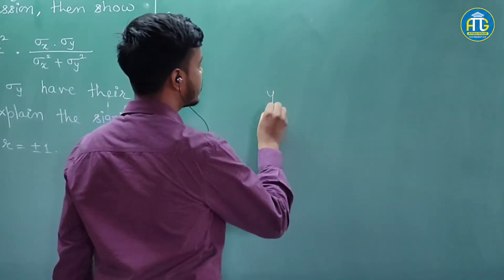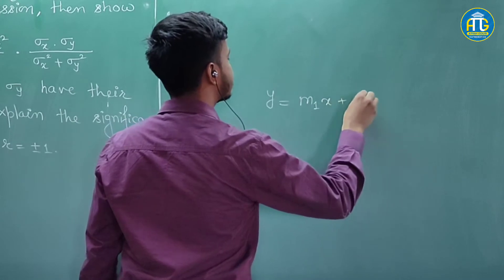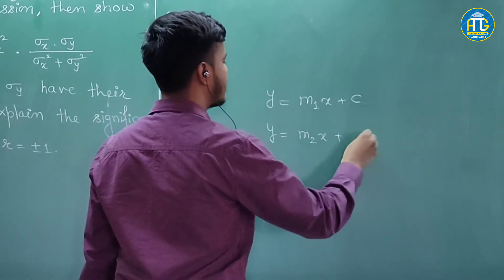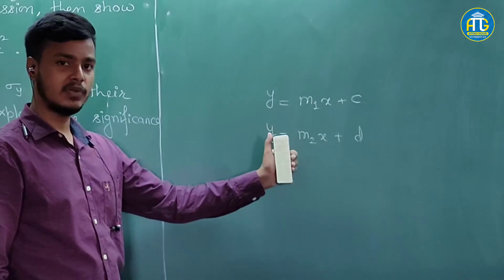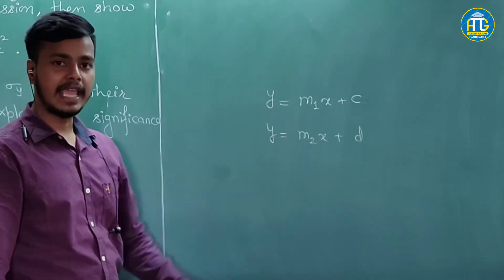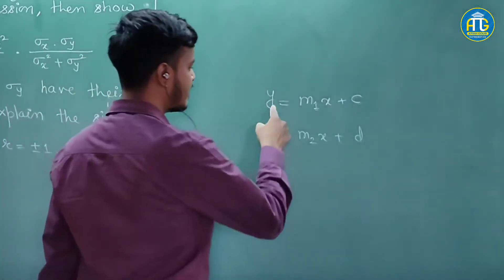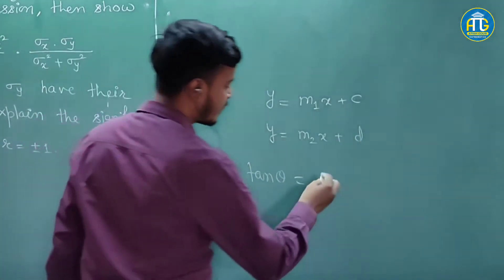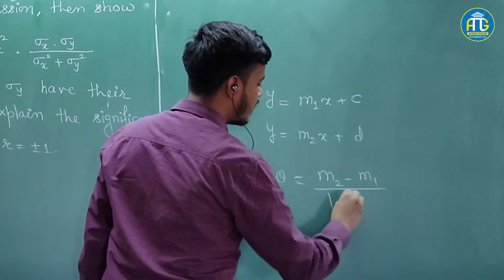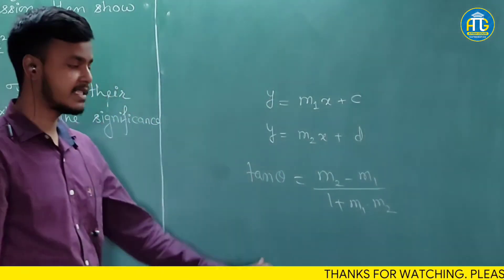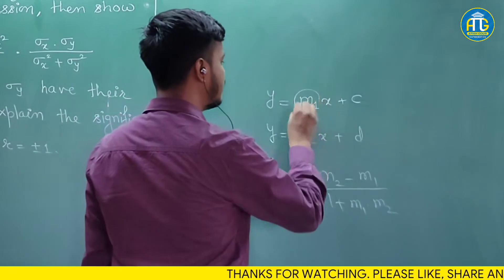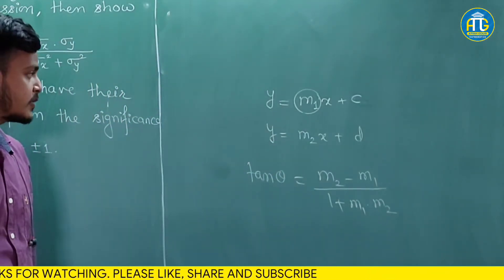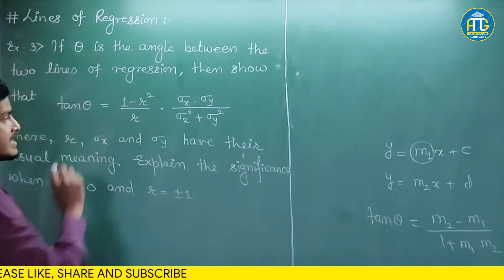Suppose you have the equation y = m1·x + c and another equation y = m2·x + d. Suppose these are two equations of a straight line, and theta is the angle between these two lines. Then it is given by tan θ = (m2 − m1) / (1 + m1·m2), where m1 and m2 are the slopes of the respective lines. We are going to make use of this formula to prove our result.